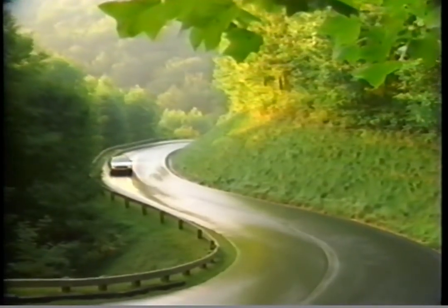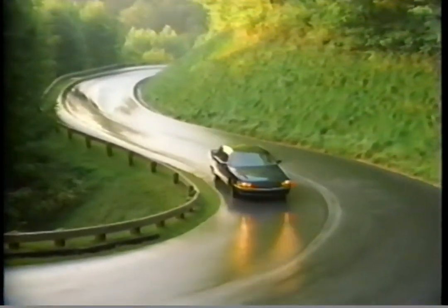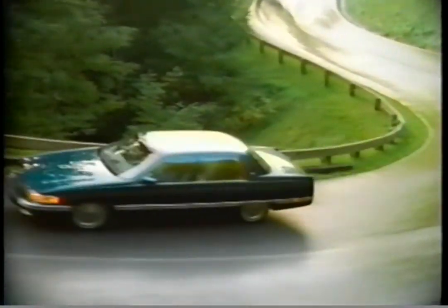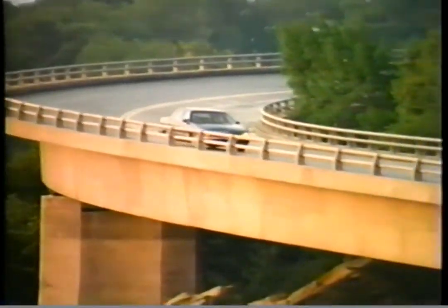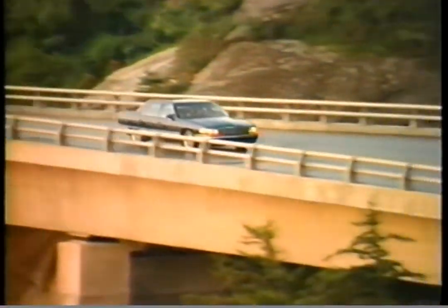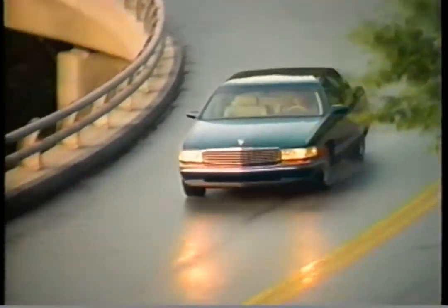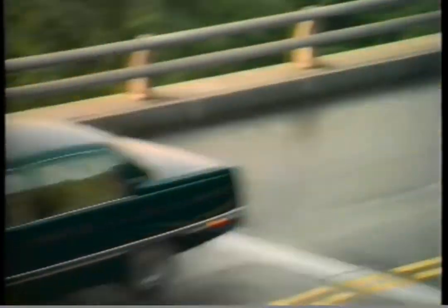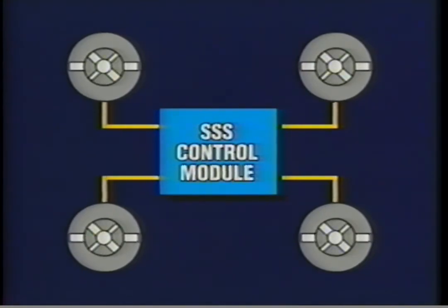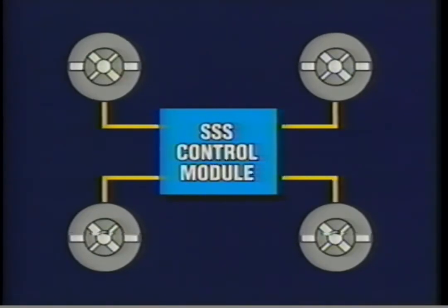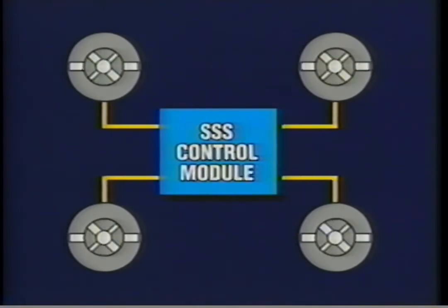Because several different inputs are involved, it's possible for one input to call for soft or comfort when another calls for normal or firm. When that happens, the system will always firm up the ride for maximum stability and control. Speed-sensitive suspension does not command each strut independently — it cannot signal front struts independently of rear, or left independently of right, only all four at once.